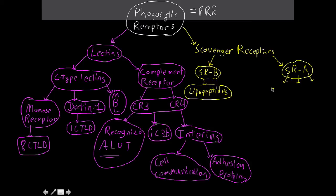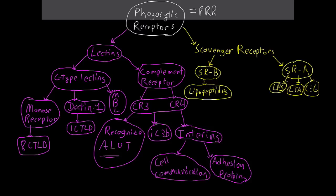SRA binds to: the lipopolysaccharides of gram-negative bacteria, the lipoteichoic acids of gram-positive bacteria, and CpG-rich DNA — which is a common structural feature of pathogenic microorganisms.